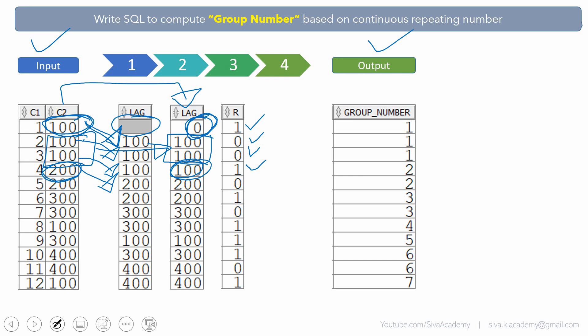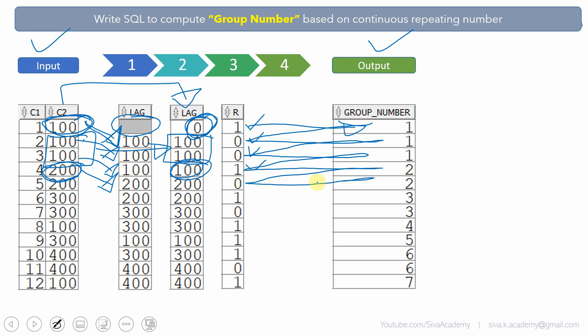The final step is to compute the cumulative sum. Starting with 1, then 1 plus 0 is 1, again 1 plus 0 is 1, then 1 plus 1 is 2, 2 plus 0 is 2, 2 plus 1 is 3, 3 plus 0 is 3, 3 plus 1 is 4, and so on. We will use the analytical SUM function to compute this cumulative sum, which gives us the final group number. This is our expected output.